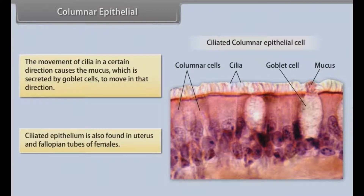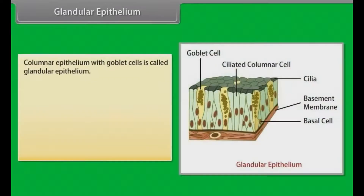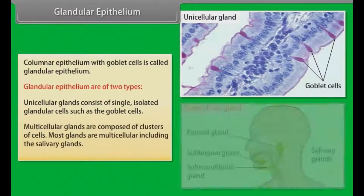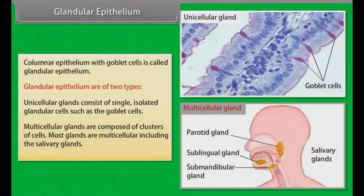Ciliated epithelium is also found in the uterus and fallopian tubes of females. Columnar epithelium with goblet cells is called glandular epithelium. Glandular epithelium is of two types: unicellular glands consist of single isolated glandular cells such as goblet cells, and multicellular glands are composed of clusters of cells. Most glands are multicellular, including the salivary glands.